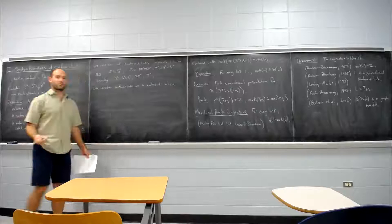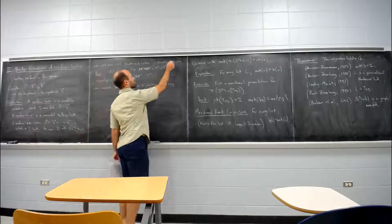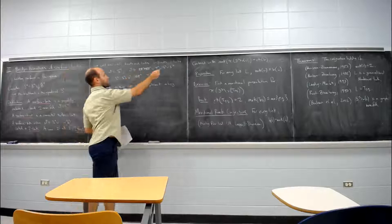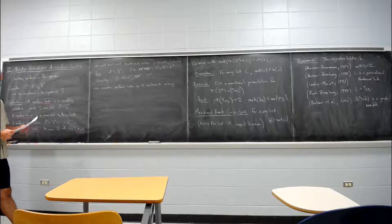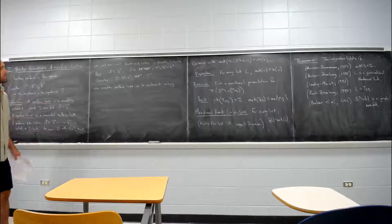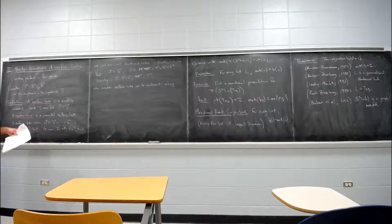So an obvious first invariant we have which can distinguish surface links is the number of components, which we have in the classical case. A two component one link is never isotopic to a one knot. But we also have the homeomorphism type of surface or the Euler characteristic.